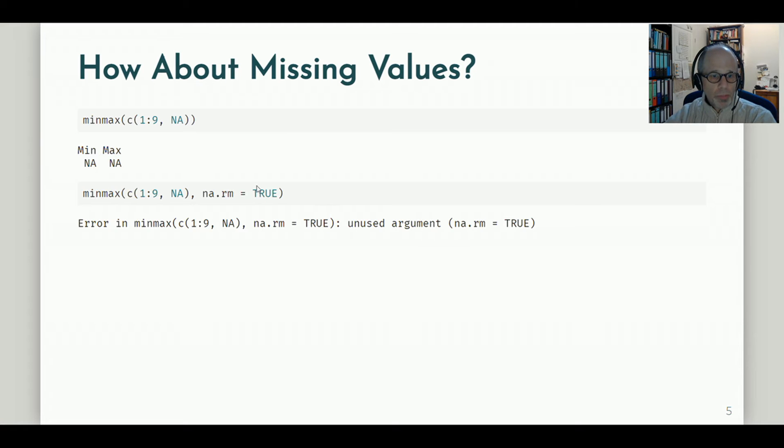So the minmax function as it is now in the simple version does not provide the user with an option to specify how missing values shall be treated. We can only use it with the default option of not removing missing values. So we get NA back as soon as we pass it at least one NA element.